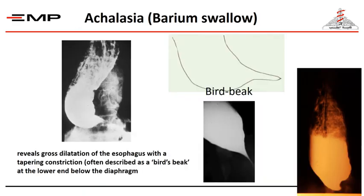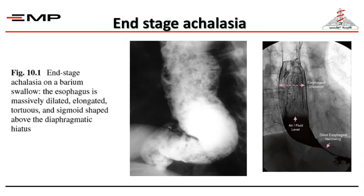Barium swallow shows the pathognomonic sign called the bird beak or parrot beak appearance — a smooth, regular, funnel-shaped stricture of the lower end, most importantly lying below the diaphragm. In end-stage achalasia, we find a sigmoid esophagus due to huge dilatation from the long-standing stricture, with the esophagus found full of food and air, and a visible fluid level from stagnant fluid and food in the esophagus.